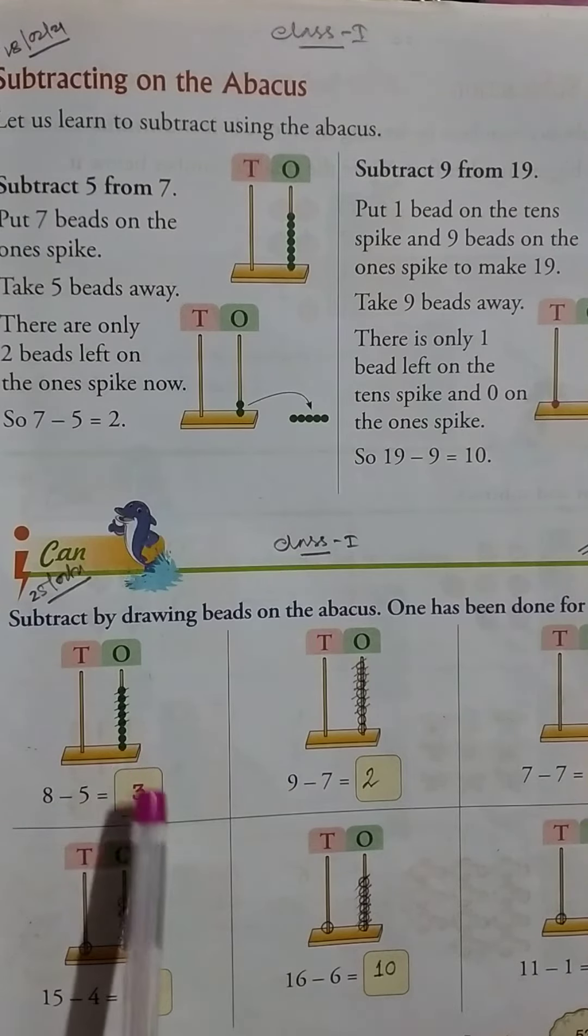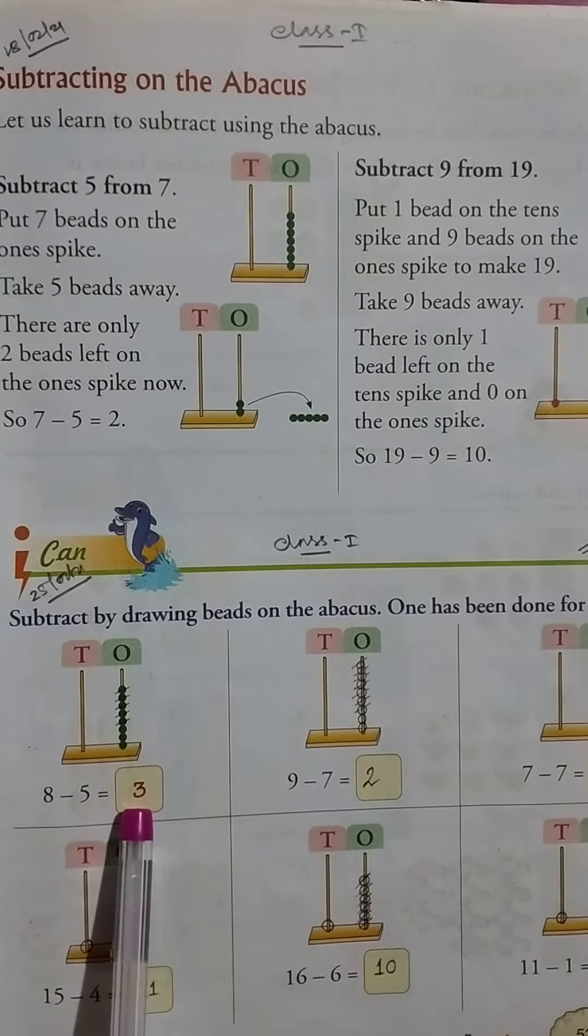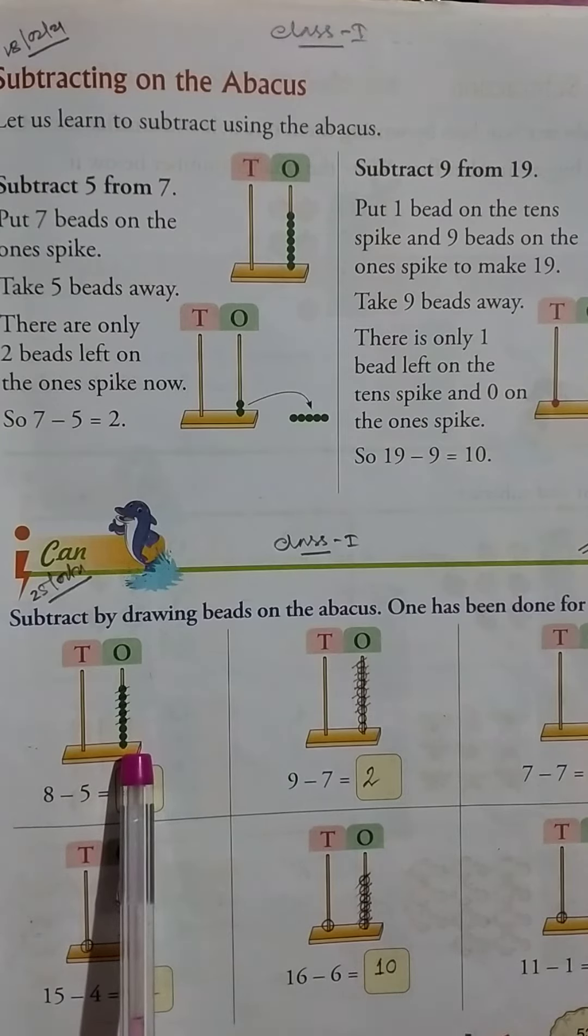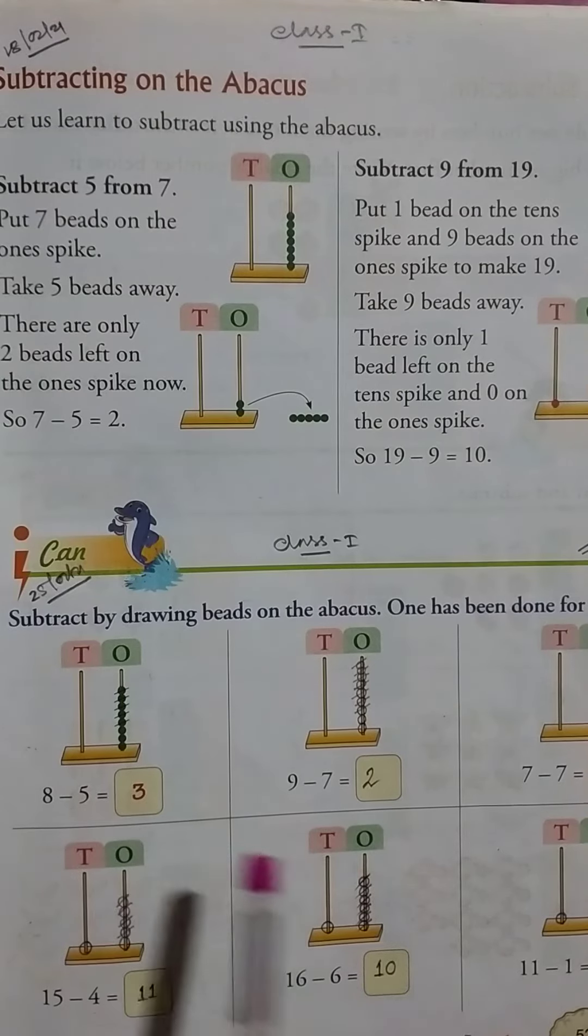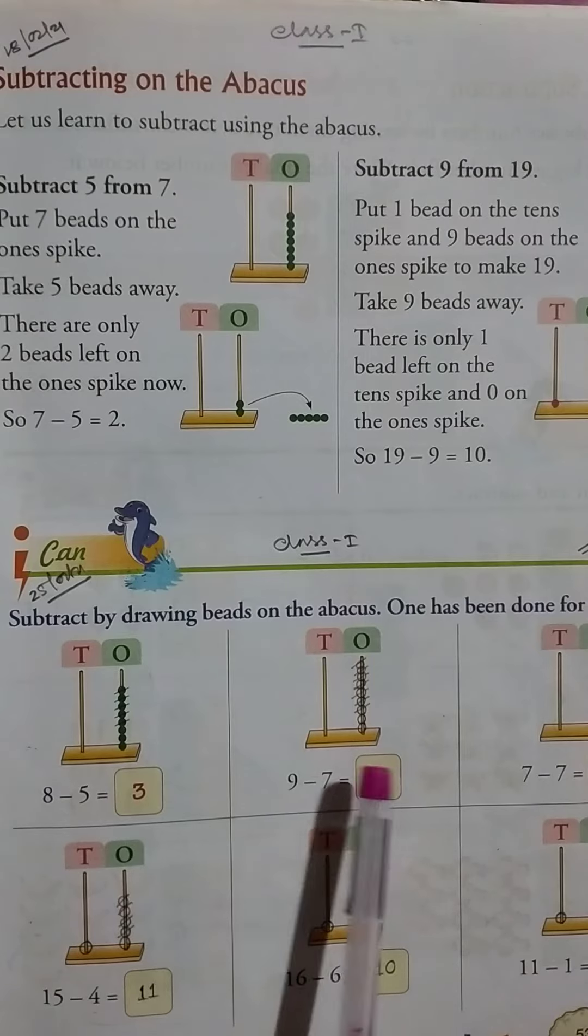Then take 5 beads away. There are only 3 beads left, 1, 2, 3 left on the ones spike. So 8 minus 5 equals 3. Same as it comes up. 9 minus 7 equals 2.